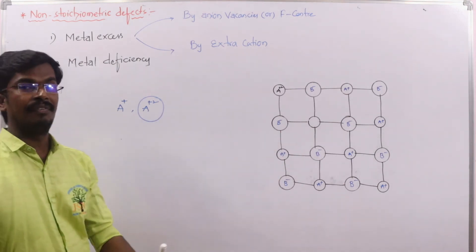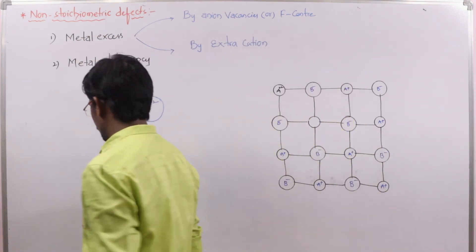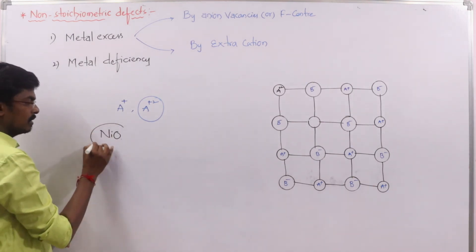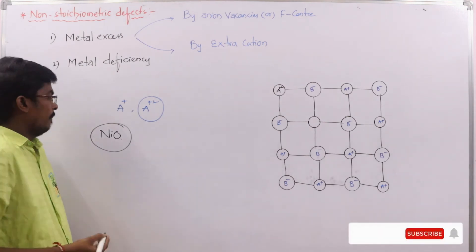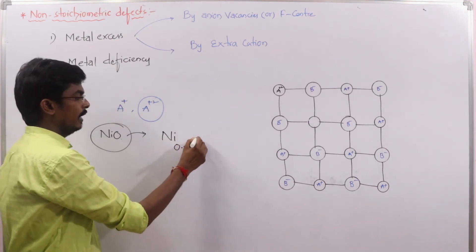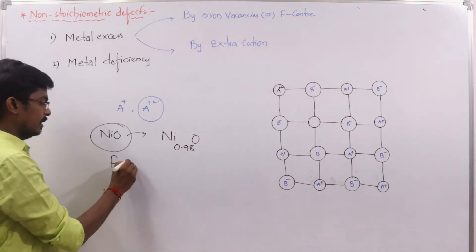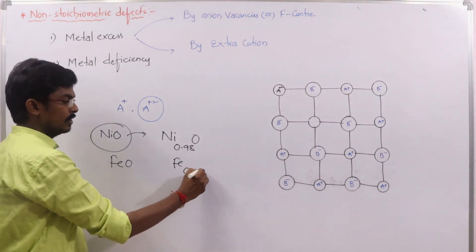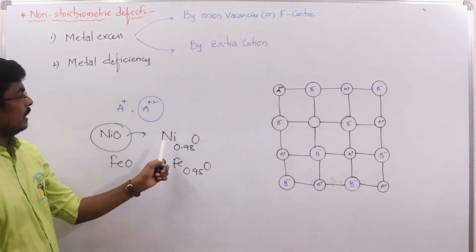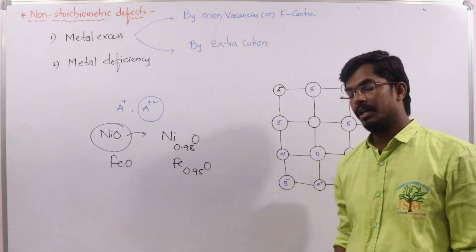Most solids are very difficult to prepare in exact stoichiometric ratios. For example, iron oxide, iron sulfide, and nickel oxide commonly show non-stoichiometric compositions. Nickel oxide may be found as Ni₀.₉₈O, and iron oxide exists as Fe₀.₉₅O in non-stoichiometric ratios. Questions about these non-stoichiometric ratios are asked in competitive exams.